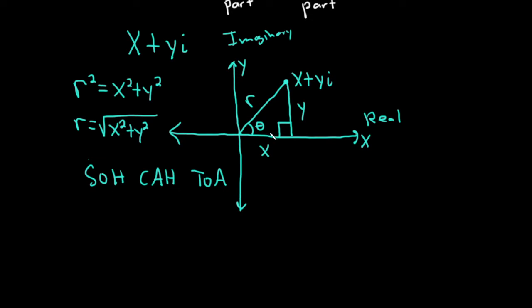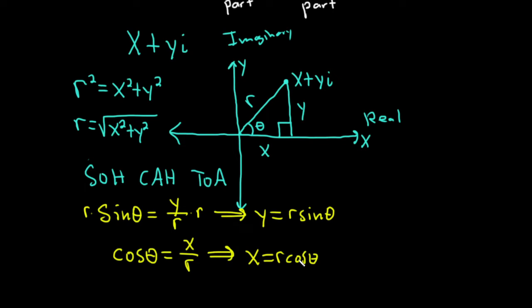We can use SOHCAHTOA to come up with some other relationships. I'm going to put all of this in a box in a minute once we get there. I'm just showing you how to come up with it. So sine is opposite over hypotenuse. So the sine of theta is going to be y over r, and that means that y is equal to r sine theta. And you can use cosine now. Cosine is adjacent over hypotenuse. So the cosine of theta is going to be x over r. Multiplying by r gives us x equals r cosine theta. And you can also create a relationship for tangent. Tangent is opposite over adjacent. So tangent of theta would be y over x.